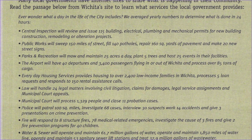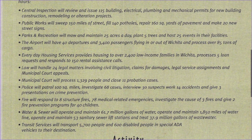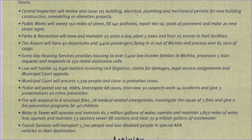Parks and Recreation will mow and maintain 25 acres a day, plant five trees, and hold 25 events in their facilities. The airport will have 40 departures and 3,400 passengers flying in or out of Wichita and process over 85 tons of cargo. Everyday Housing Services provides housing to over 2,400 low-income families in Wichita, processes five loan requests, and responds to 150 rental assistance calls. Law will handle 24 legal matters involving civil litigation, claims for damages, legal service assignments, and municipal court appeals.